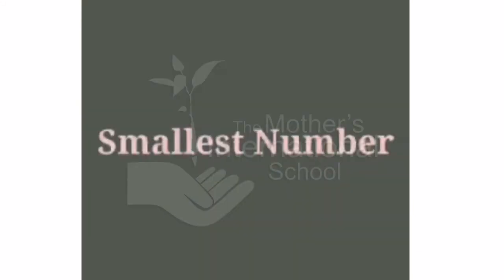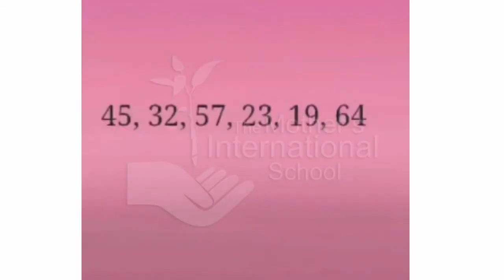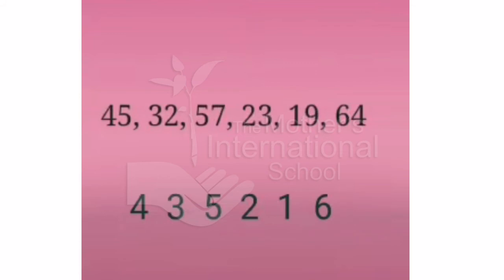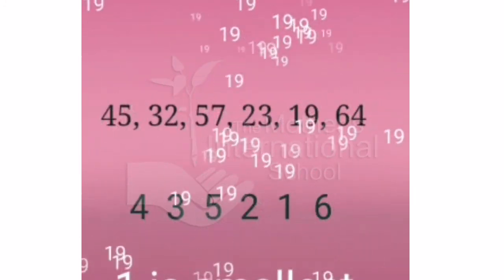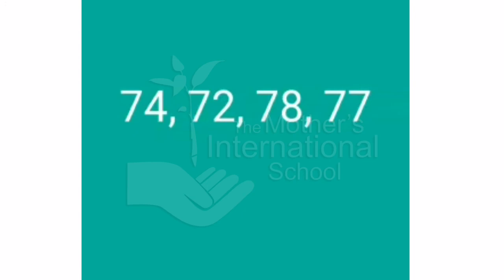Now the smallest number. Here we check the first digit of the numbers — 1 is the smallest first digit, so the smallest number is 19. Now we take another example.